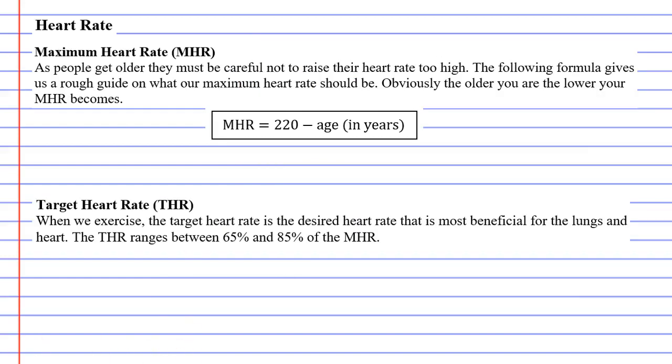We are now going to talk about our maximum heart rate, or MHR, as well as our target heart rate, or THR. As we get older, our maximum heart rate decreases, meaning that when we do strenuous activities or exercise, if our heart rate goes up too high, it becomes dangerous for our health.